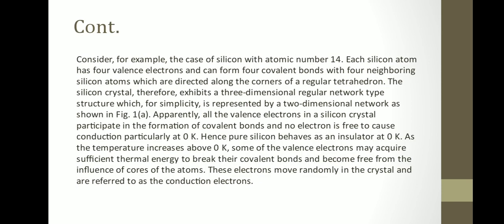Each silicon atom has four valence electrons and forms four covalent bonds with four neighboring silicon atoms, directed along the corners of a regular tetrahedron. The silicon crystal exhibits a three-dimensional regular network structure, represented for simplicity as a two-dimensional network in figure 1(a). At zero Kelvin, all valence electrons participate in covalent bonds and no electron is free to cause conduction. Hence pure silicon behaves as an insulator at zero Kelvin. As temperature increases above zero Kelvin, some valence electrons acquire sufficient thermal energy to break their covalent bonds and become free conduction electrons.